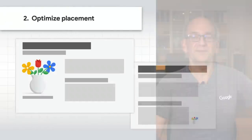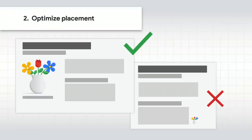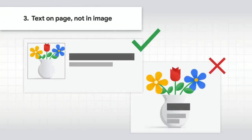Next, optimize image placement. Whenever possible, place images near relevant text and ideally provide a caption close to the image. Consider placing the most important image near the top of the page. Don't embed important text inside of images — in particular, avoid doing that for page headings and menu items. Not all users and search engines can access text in images. Translation tools won't work on images, and often these images don't make particularly useful previews for your site.